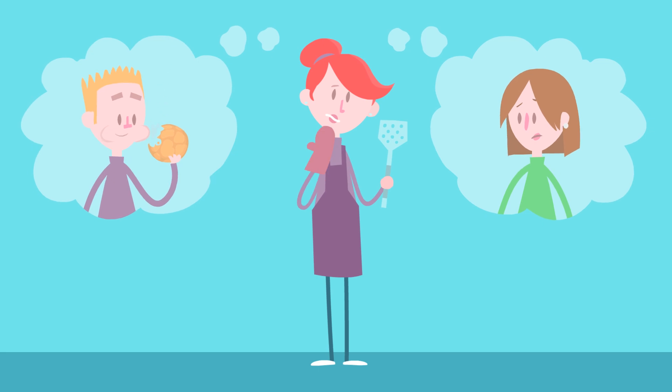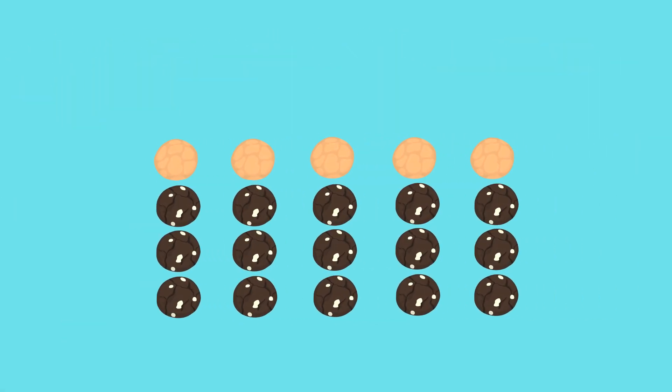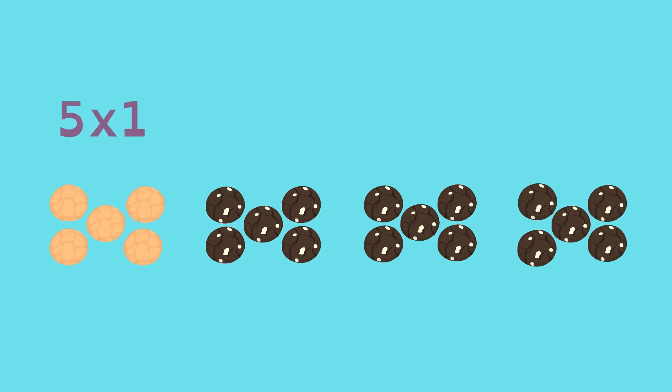But Carl's the only one that likes lemon, and Stacy doesn't eat sweets. So Lucy redistributes the cookies into 1 group of 5 lemon and 3 groups of 5 chocolate.